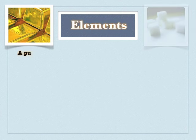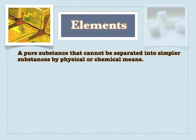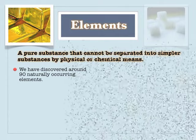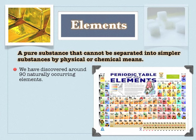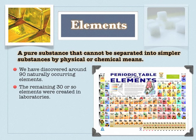An element is a pure substance that cannot be physically or chemically simplified. There are about 90 naturally occurring elements, and we can say with confidence we've discovered every naturally occurring element in the universe. We continue to discover elements, but they are artificially created in the laboratory — they are too unstable to exist in nature. So unless there is some sea of super-stability of super-heavy elements we have not yet discovered, we have found every element in the universe.